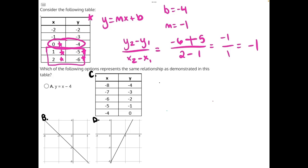So our m value is negative 1, and now we have everything we need to write our equation. y equals negative x plus, excuse me, plus a negative 4, which would be minus 4. Now that we have our equation, I'll make some more room, and we'll start looking at our answer choices.